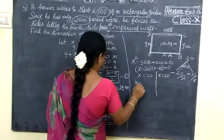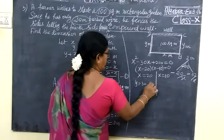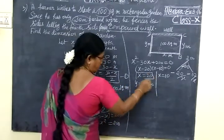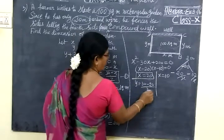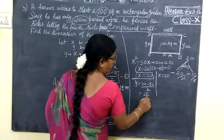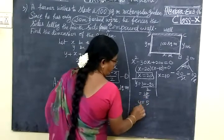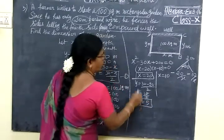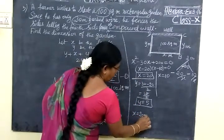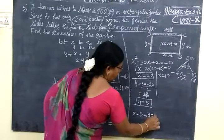Then y equal to 30 minus 20. Instead of here, you are writing this x equal to 20 by 2. 30 minus 20, 10. So 10 by 2. So if you cancel, 5. So one set of value. When x equal to 20 meter, y value is 5 meter.